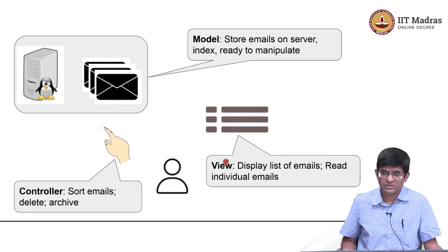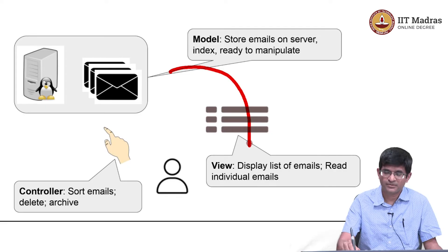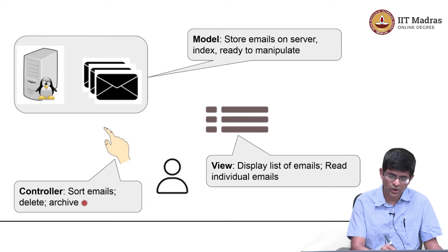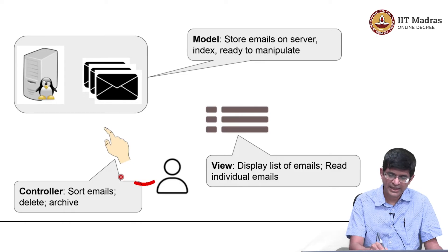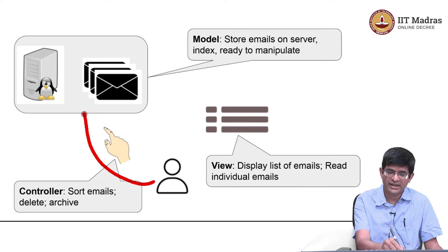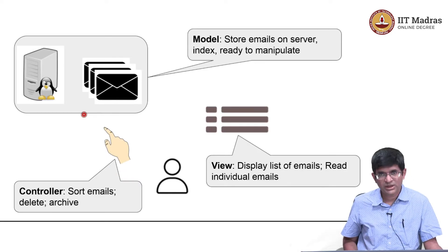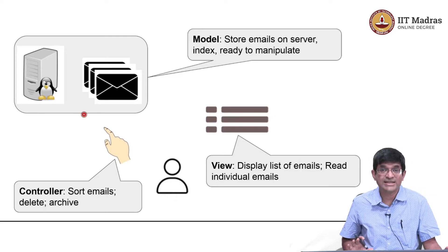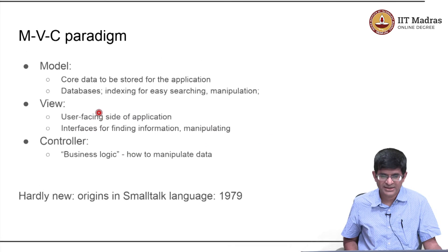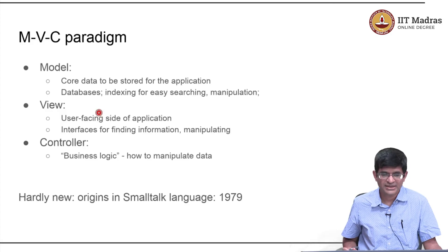That right-hand side is one part of this — it basically says how I can use the model to view it. Then comes the question what do I do with those emails? I might want to sort them, delete certain emails, archive some of them, sort them into folders — things of that sort. That is another interface from the user back into the model or the server, and this part is what we call the controller. Pretty much any kind of application that you can think of can finally be broken down into something at least resembling this. And because of that, MVC — the model view controller — is considered a very good paradigm to understand how applications are built.